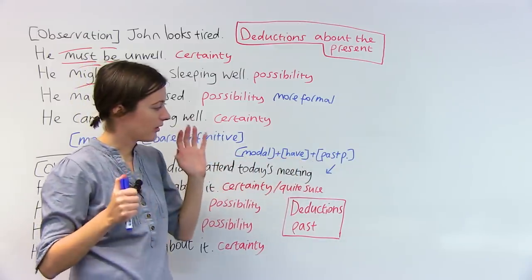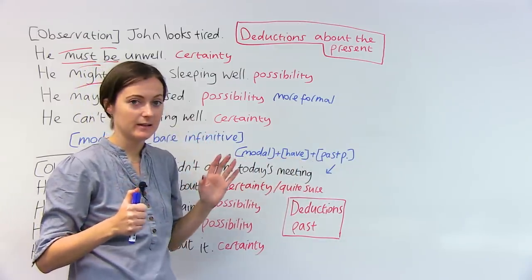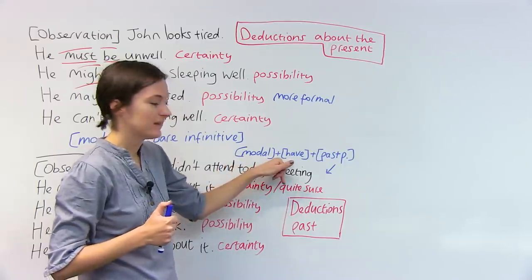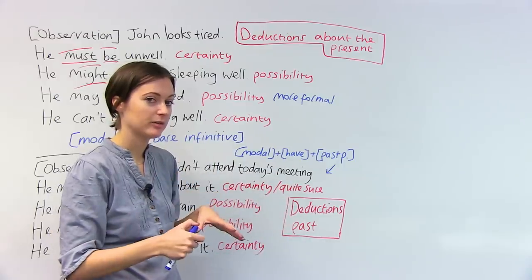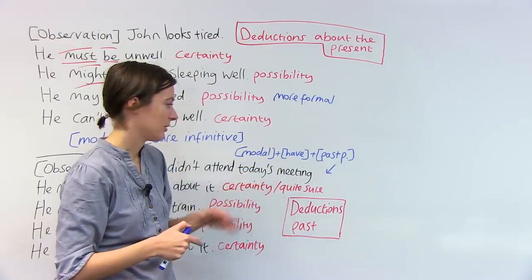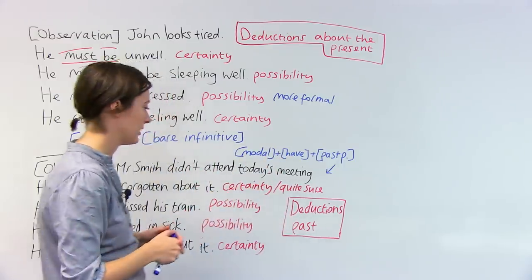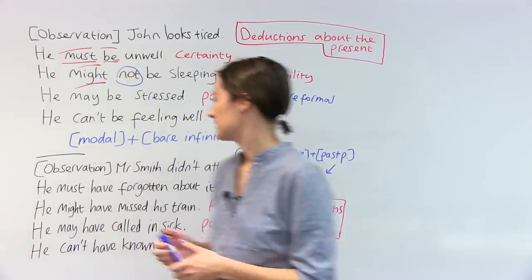We use modal verb plus have plus the past perfect. So I find it easy in that when we see have there, it shows us that we're talking about something in the past. That's what you need to remember. Have shows us we're talking about the past. Let's look at some examples.